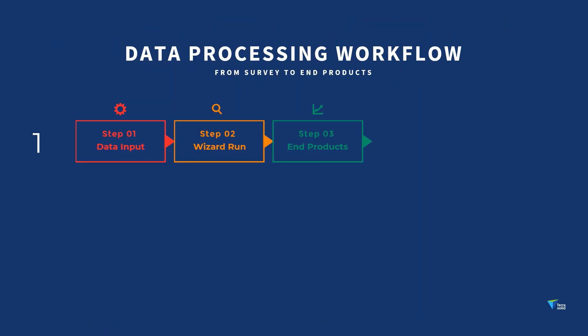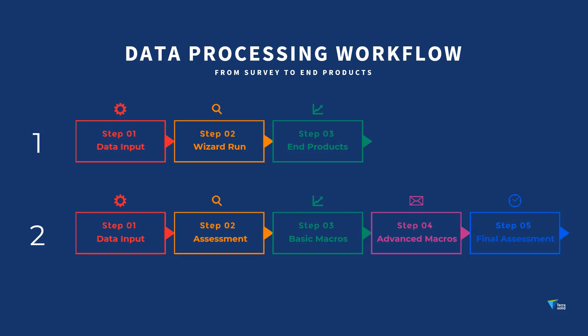What are the classification possibilities with TerraSolid? There are two options for processing UAV data. The first is a simplified workflow where data input and extraction of end results are managed by a wizard. In the second scenario, the user can adjust steps and settings according to the data, while classification is still automatic. Since it is not a black box solution, you can inspect the wizard steps and adjust for specific project requirements.